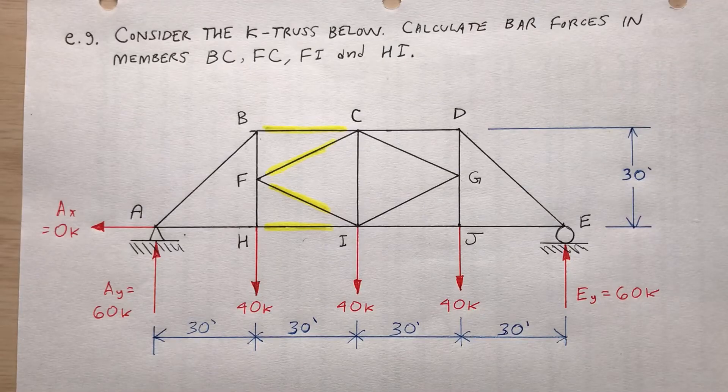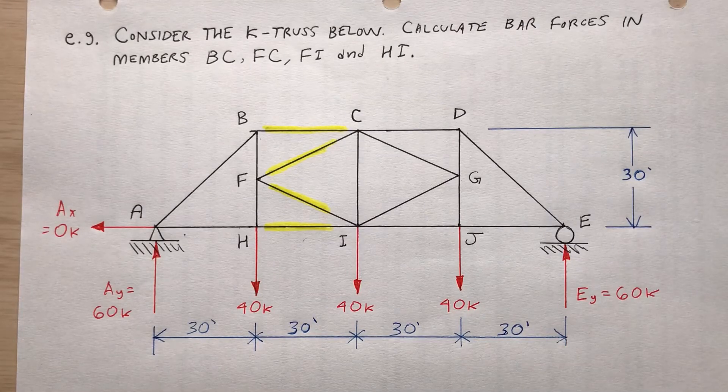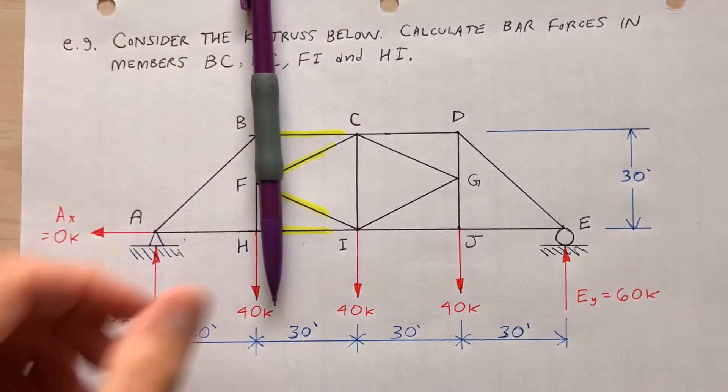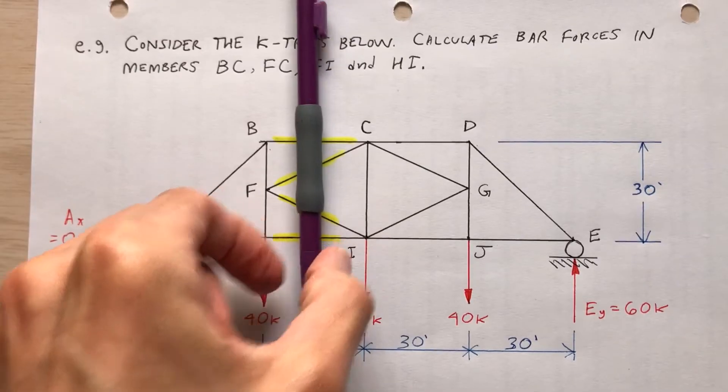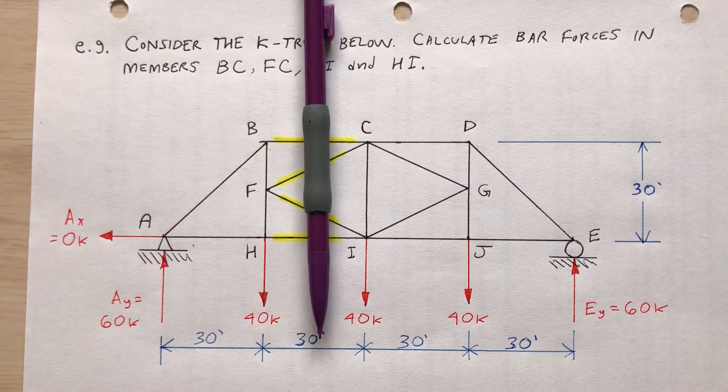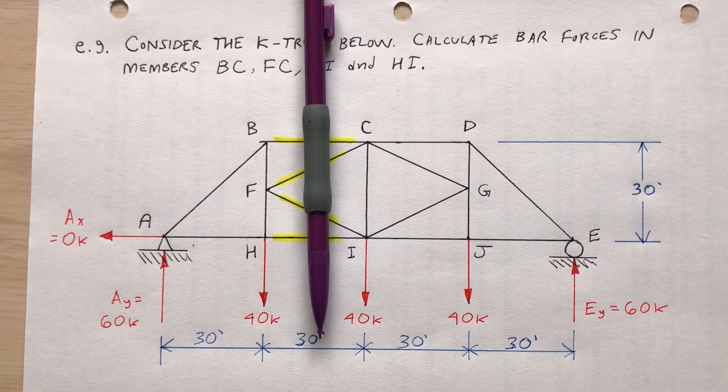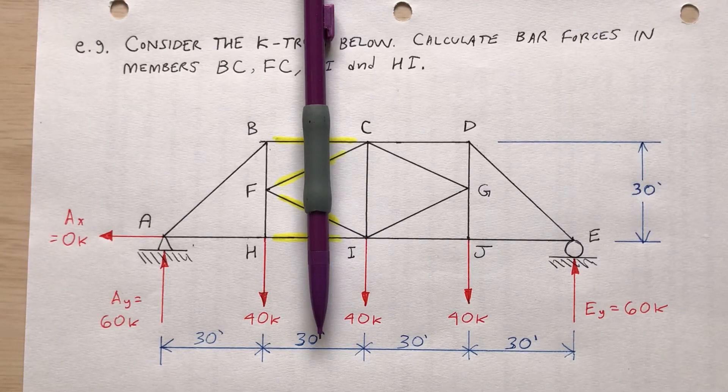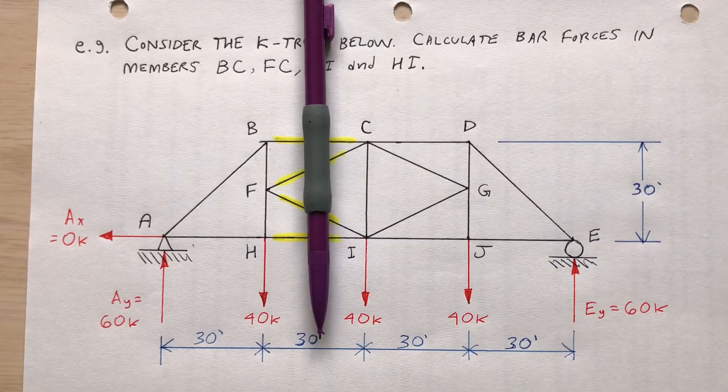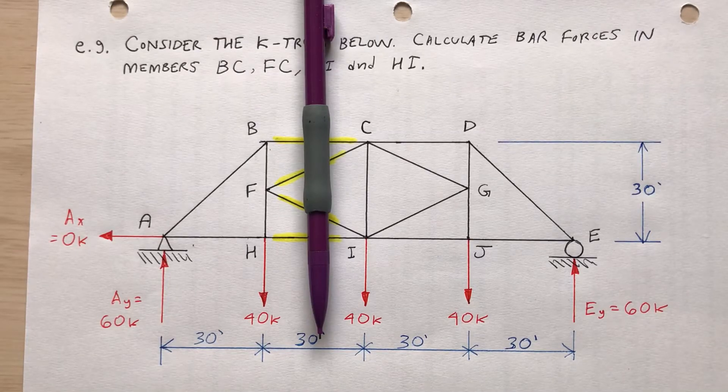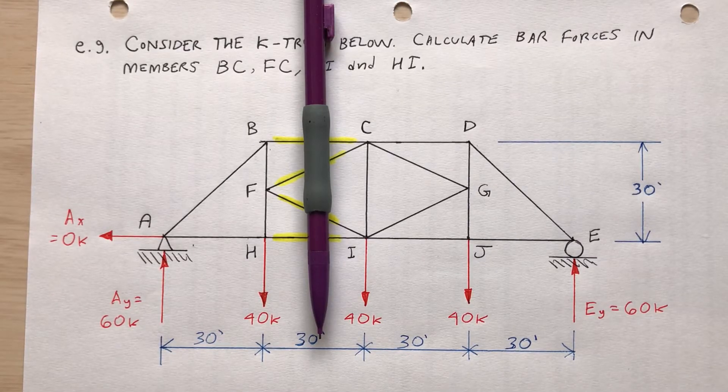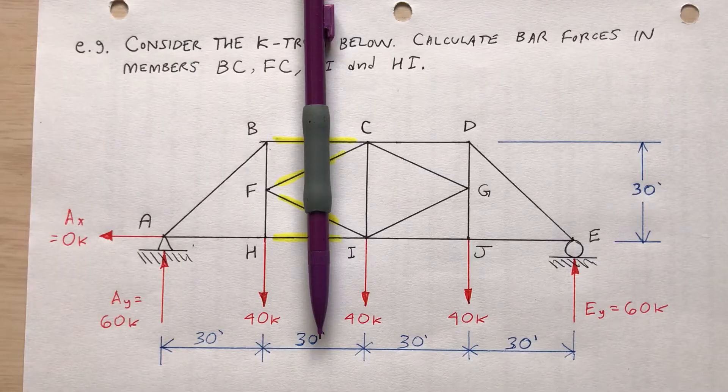Okay, so I'm going to use the method of sections. So to use the method of sections, I could cut through here. Now the problem if I cut through there and analyze the left side, or the right side for that matter, is that there will be too many unknowns. I'm cutting through four unknown bars. So it seems to me as though there would be too many unknowns to be able to figure out if I make a cut that straight down. So I have to try some other approach.